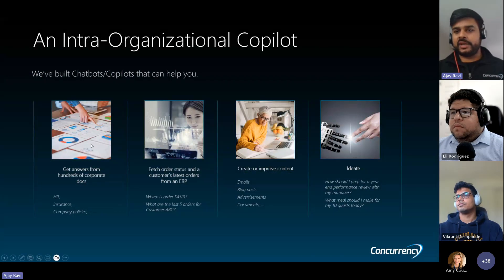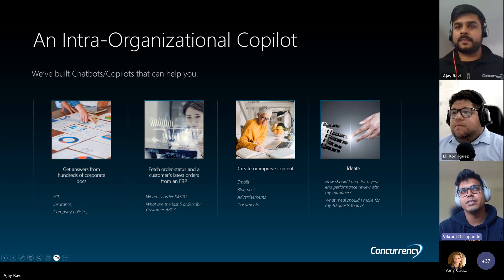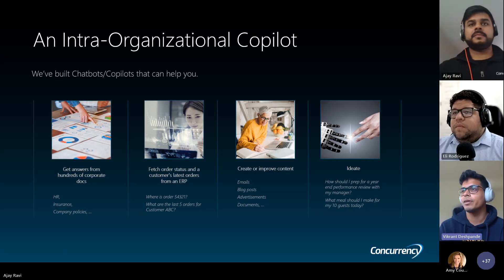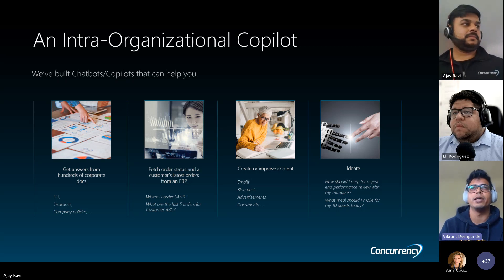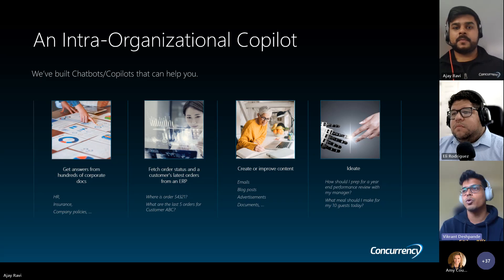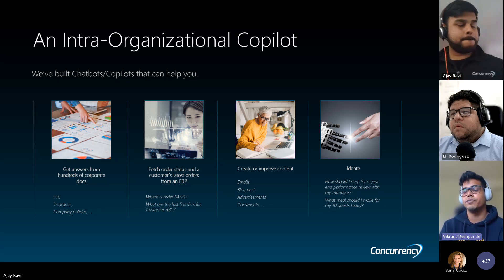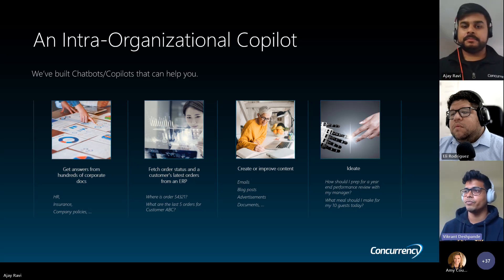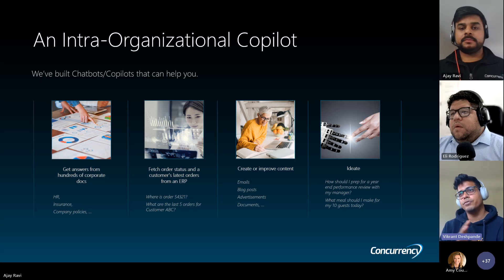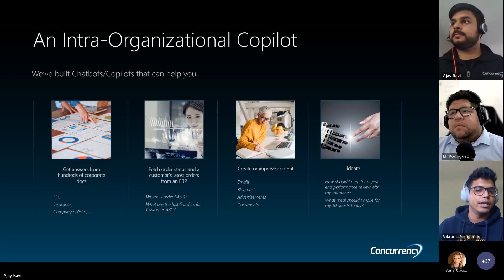From a data science perspective, here at Concurrency we've worked on quite a few LLM-based applications, including inter-organizational copilots and chatbots. These chatbots can help you get answers from around 100 corporate documents, retrieve order status or customer information from an ERP, or even use it for ideation or content creation and improvement. The use cases range from just accessing your data sources all the way to generating content and making processes better as you go.